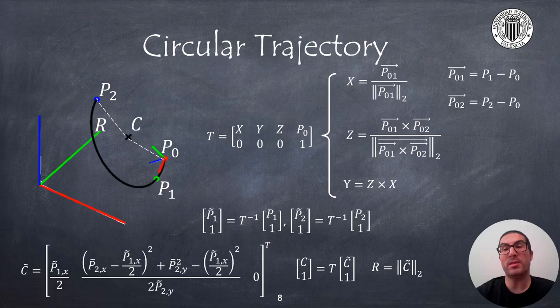Obviously, the points must meet some conditions to be able to generate a circular path, but this is out of the scope of this presentation, so we will assume that, for instance, the points are not aligned on the same line.